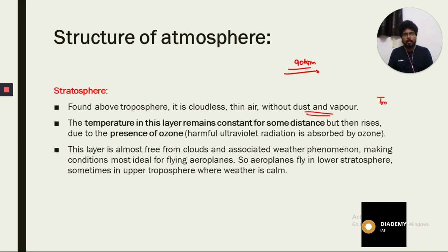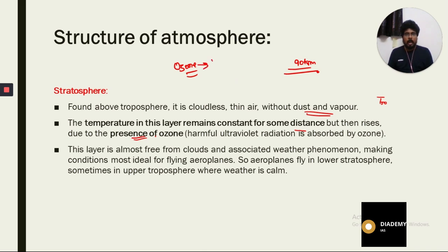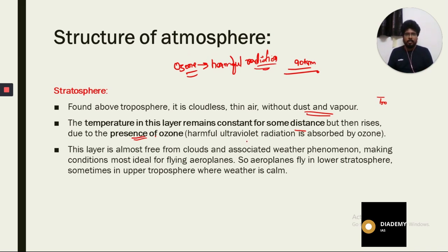Temperature in the stratosphere remains constant for some distance, then rises due to the presence of ozone. Ozone is the layer present in the stratosphere which protects us from harmful radiation of the Sun. The ozone layer stops harmful ultraviolet radiation from entering the Earth's atmosphere by absorbing it.